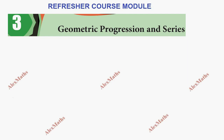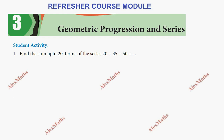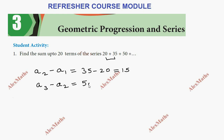Hi students, this is Alex here in this refresher course video on Class 11 Mathematics Chapter 3: Geometric Progression and Series. Problem question number one: find the sum up to 20 terms of the series. The common difference is 35 minus 20 = 15, and 50 minus 35 = 15. So this is an arithmetic progression with first term 20 and common difference 15.